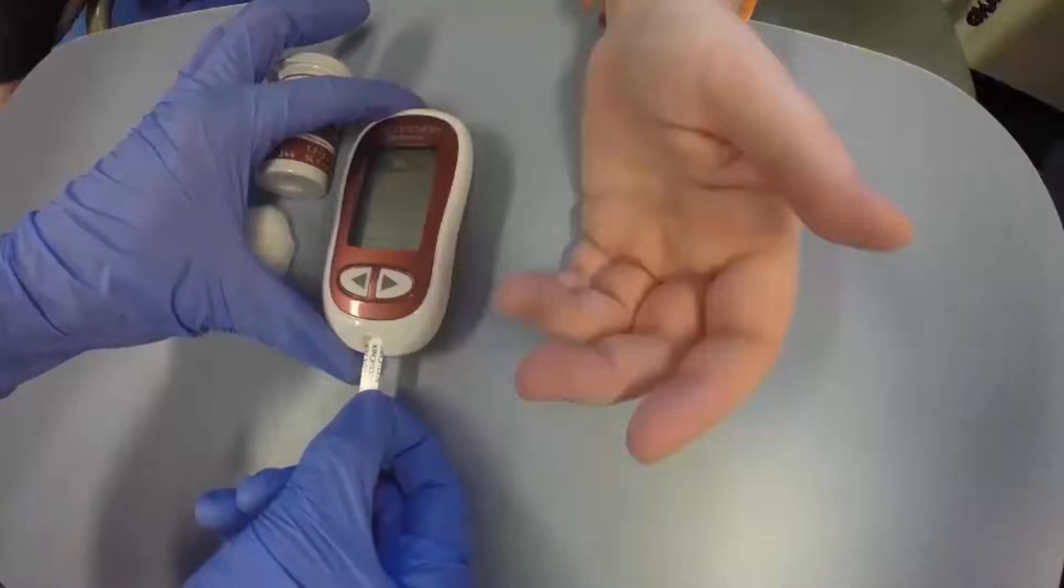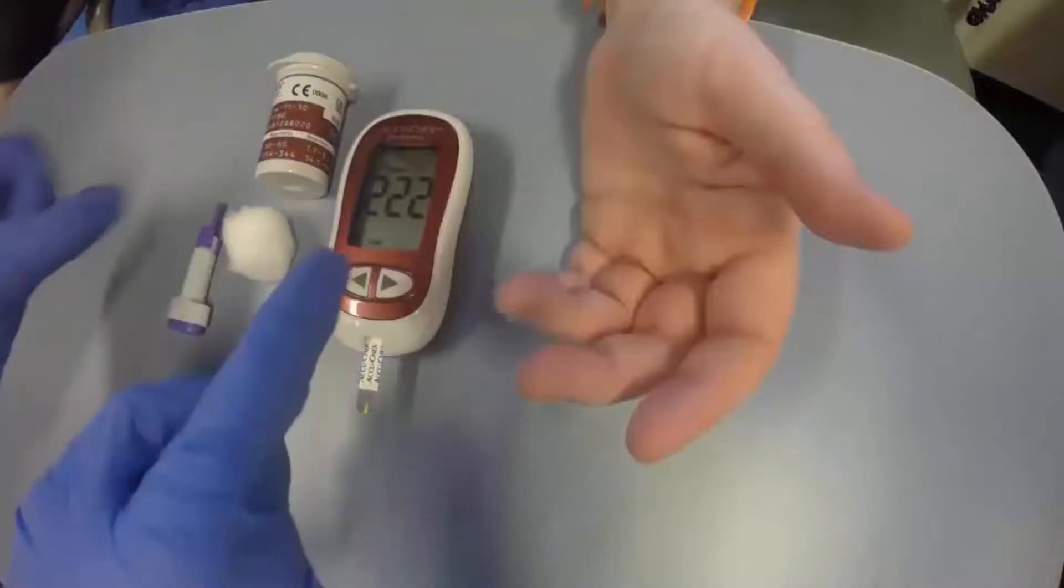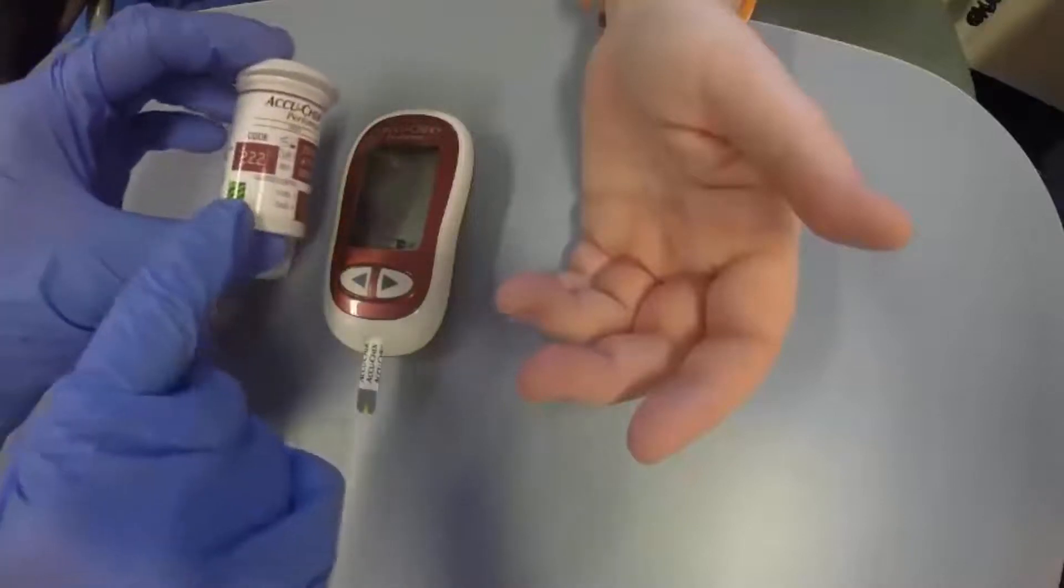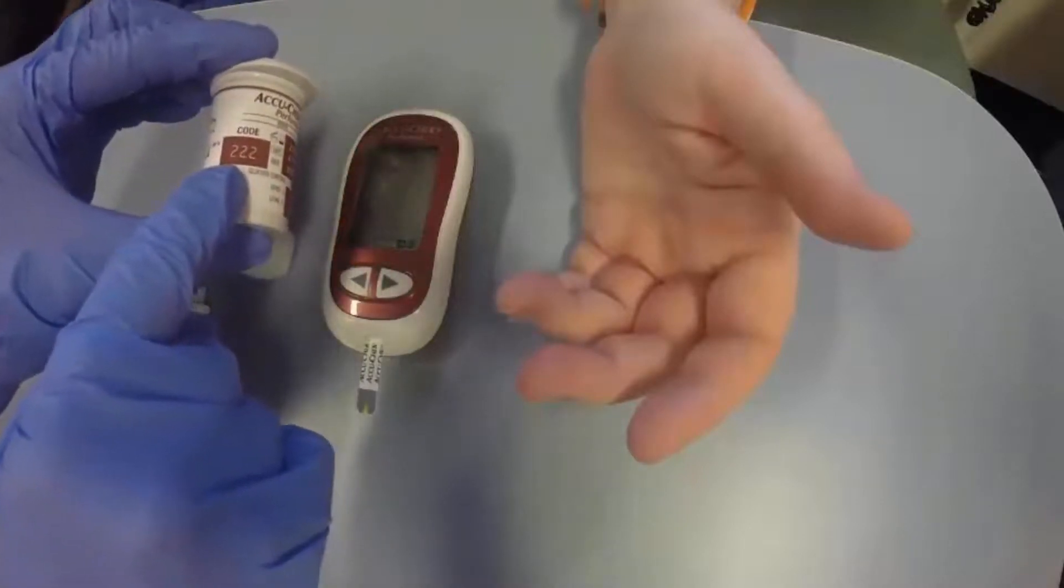Once you put this in, you will notice a number appears on the machine. In this case, it's 222. Please check that it correlates with the regent strips, as it does here: 222.